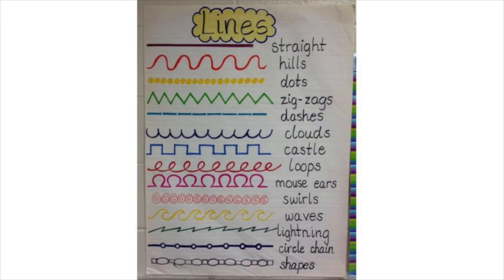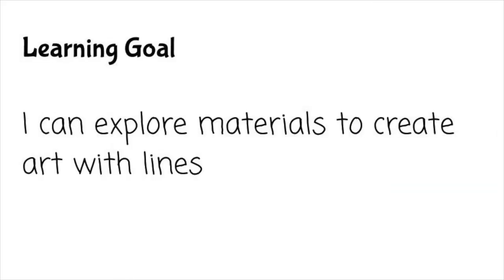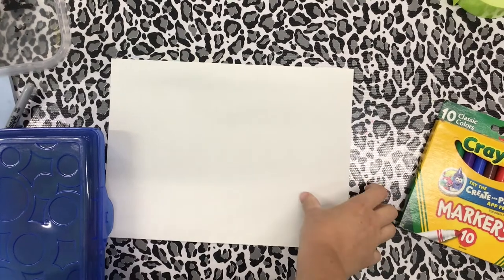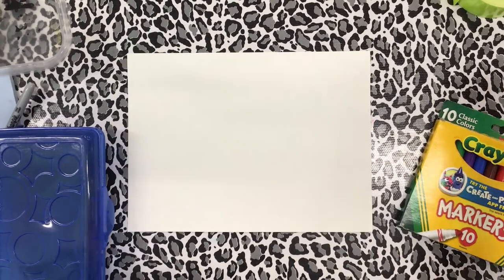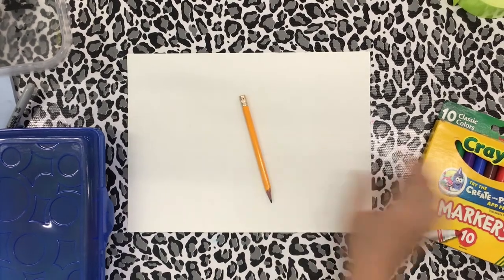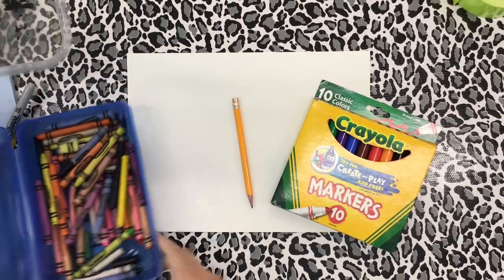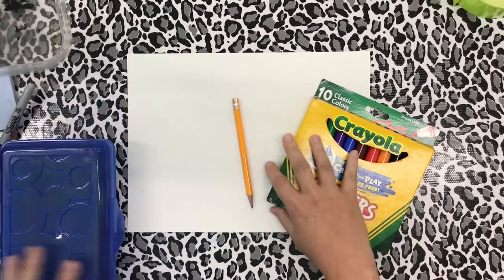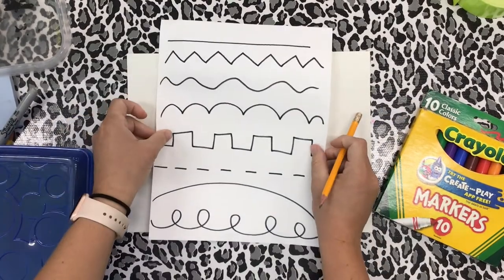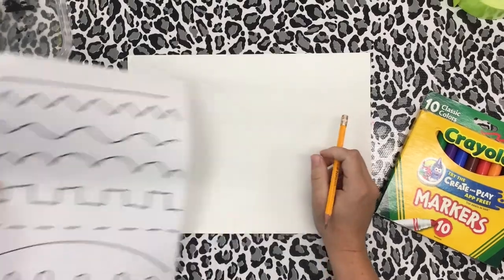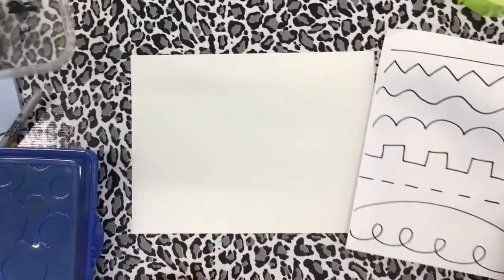Today we're going to make some art with all different kinds of lines that you see here. Our learning goal is: I can explore materials to create art with lines. We are going to start with a white piece of paper, a pencil, and something to draw and color with. Crayons and markers are great. We are going to use all of these different types of lines in our artwork.